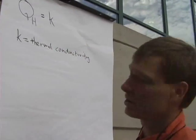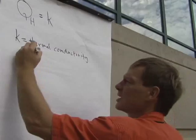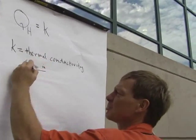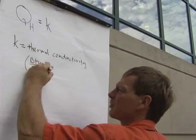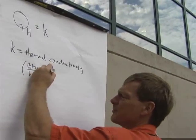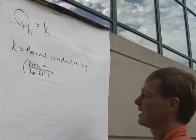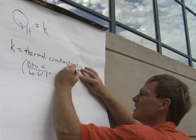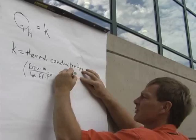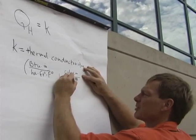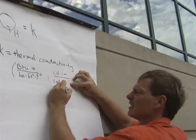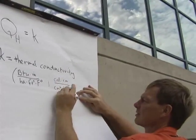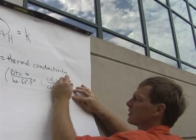K has some unusual units. In English units they are BTUs times inches per hour, per foot squared, per Fahrenheit degree — found in tables. In metric, it's calories times centimeters per centimeters squared, per hour or second, per Celsius degree.